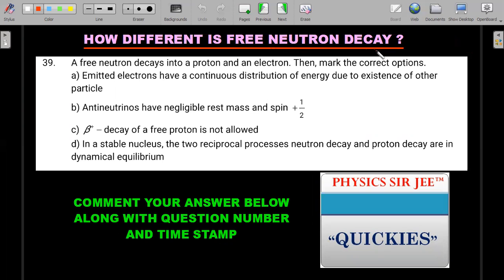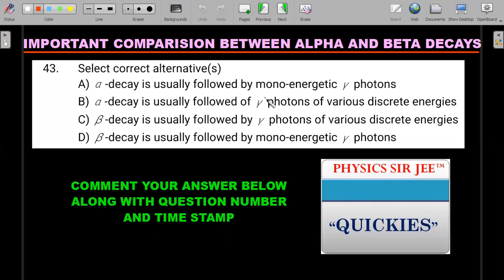Next one is how different is free neutron decay. This is something that students generally commit mistakes with. There is a free neutron, can it first of all decay? If it does, how different is it from the beta decay that we are discussing in the previous slides? Also you should know the properties of some anti-neutrinos. Four options, again mark the correct ones, more than one may be correct. Waiting for your comment below. Next one, important comparison between alpha and beta decays. Again it's about the energy distribution spectrum graph that we have drawn for beta. If I try to draw a similar graph for alpha, how does it compare? A very important question for your JEE Advanced.